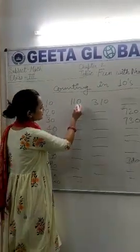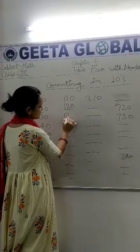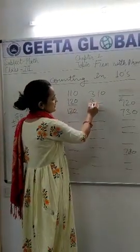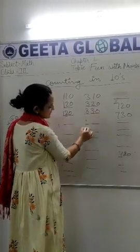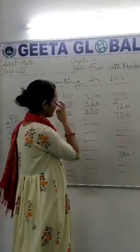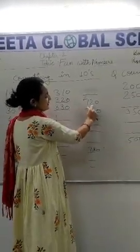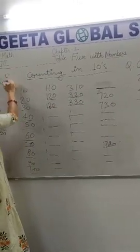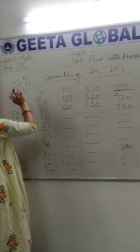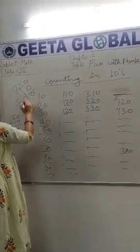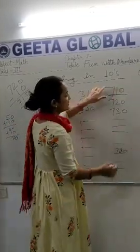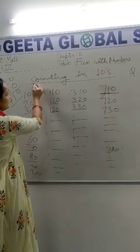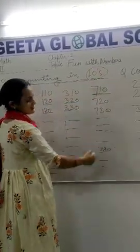110, plus 10 = 120, 130 — इस तरीके से आप इसे complete करोगे अपनी book में। 310, 320, 330, 340, 350 — इसी तरीके से complete करोगे। Next: 720 लिखा हुआ है — हमें इससे पहले वाली value चाहिए तो minus 10 करना होगा। 710, 720, 730, 740, 750 — इस तरीके से blanks complete करना है। यह हो गया counting in 10s।